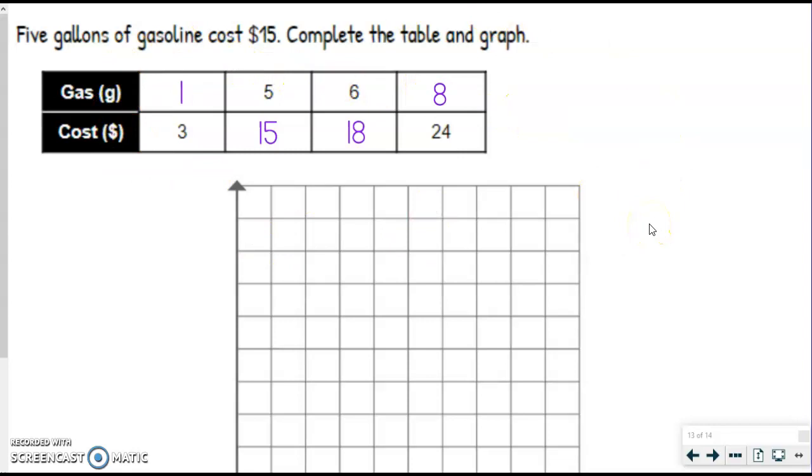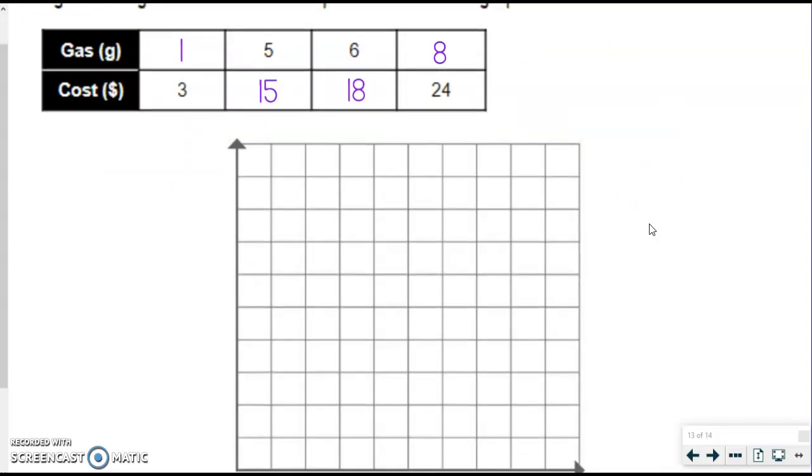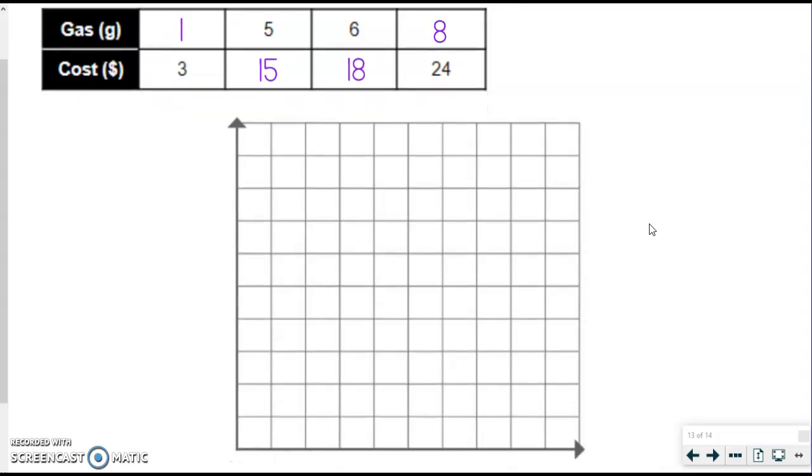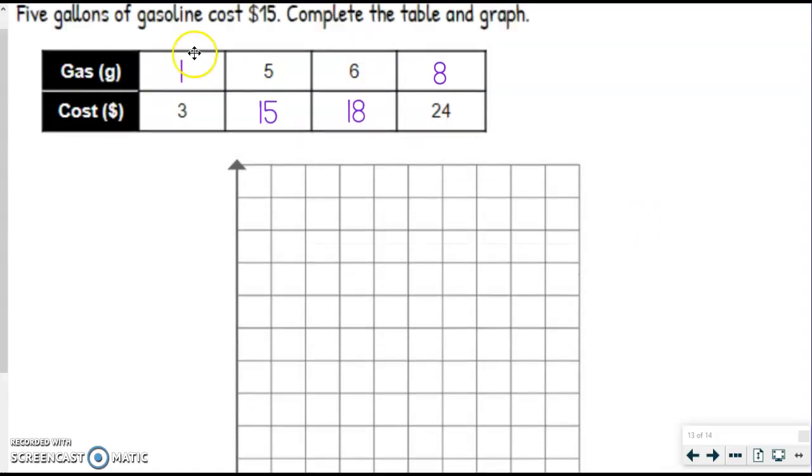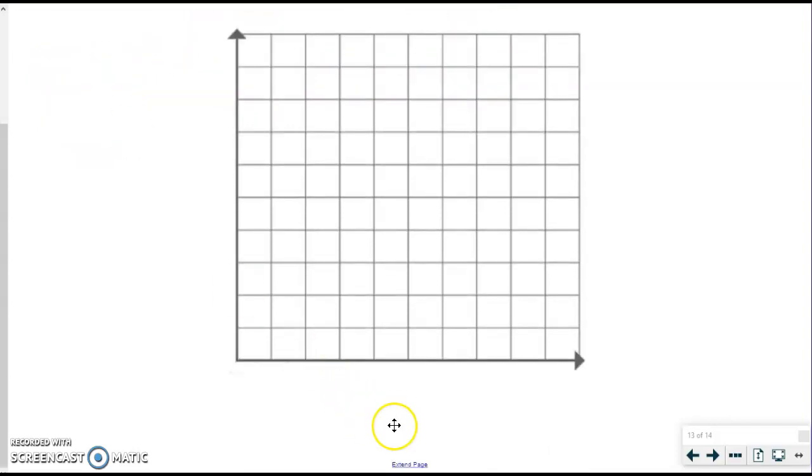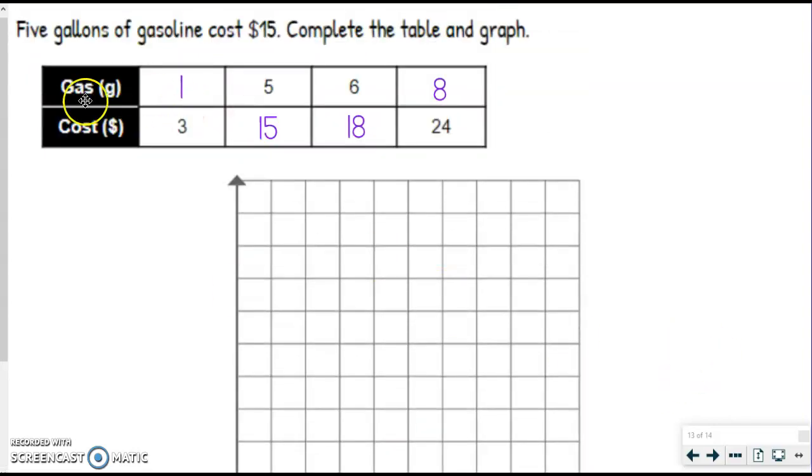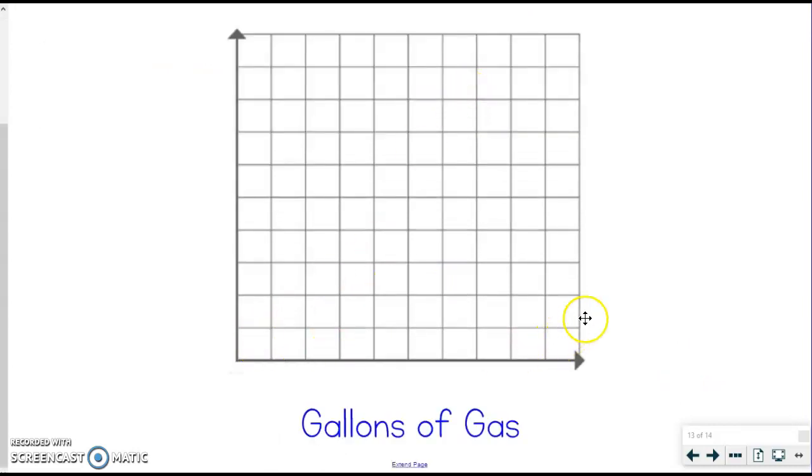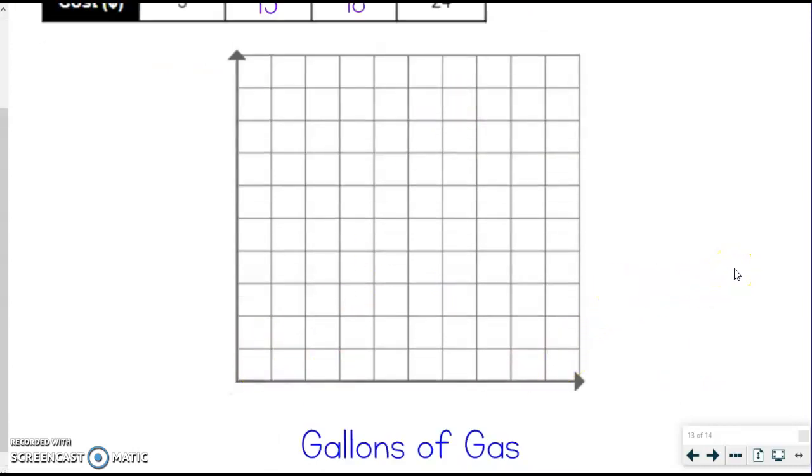All right, so if you remember, the first two things we need to get figured out are scale and labels. So we're going to start by labeling which one is which. So I've got gallons of gas and cost. So I'm going to take this top row, which represents gallons of gas, and that is what I'm going to label my x. So the top row is always going to be your x in our case.